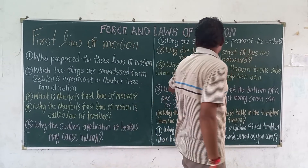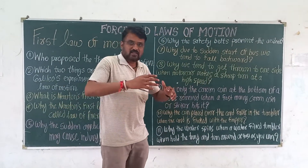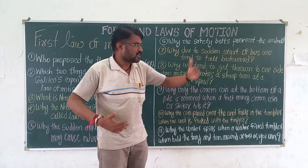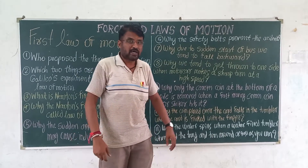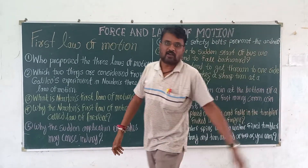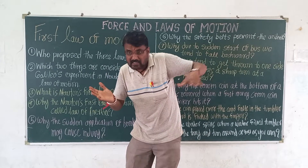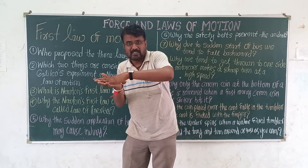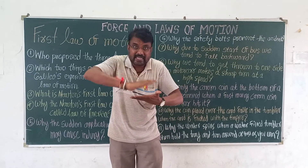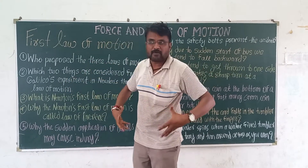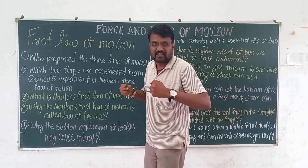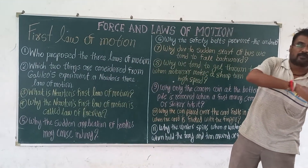Why do we tend to fall backward due to the sudden start of a bus? You are standing in the bus, and suddenly something comes in front of the bus and the driver applies the brake. The force from the brake is applied on the car or bus, stopping it. Your legs are in contact with the floor, so your legs also stop. But force is not applied on your upper body part, so your upper body will try to maintain its inertia and you will fall in the backward direction.